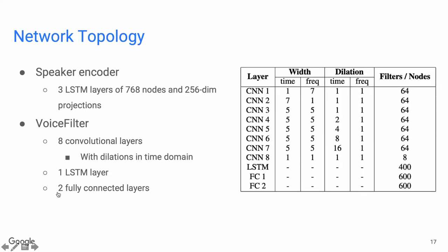Here are the topologies of our networks. The speaker encoder is simply three layers of LSTM. The VoiceFilter network has many more layers, including two-dimensional convolutional layers, an LSTM layer, as well as fully connected layers.